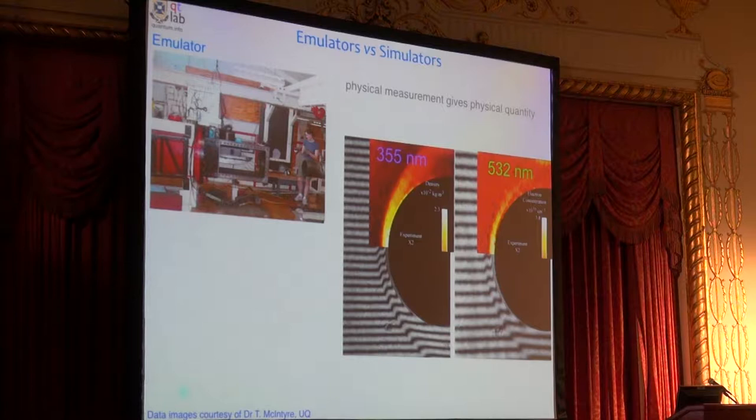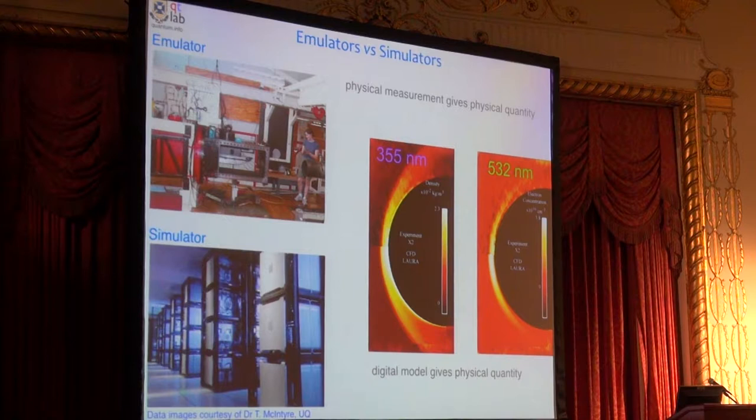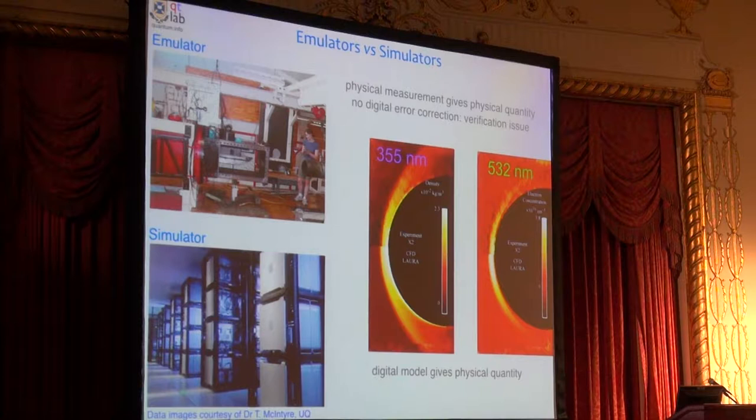But if you see something unexpected, maybe the flow is coming off at an angle you weren't expecting, you don't know. Will that really happen in the upper atmosphere? Or is that due to the fact that my dump tank wasn't big enough and there's some problem with my emulator? So you also build a simulator. And a simulator is a digital model that gives you a physical quantity. And you play those two off against one another until you're happy that what you're seeing in your lab will happen in the real world.